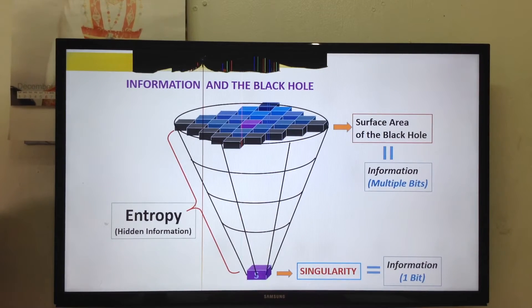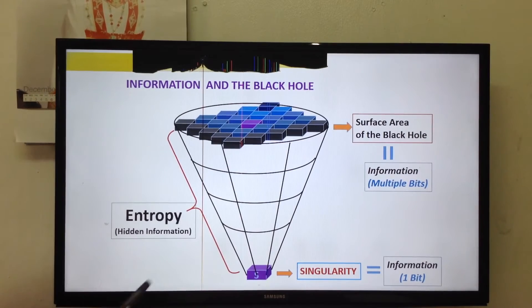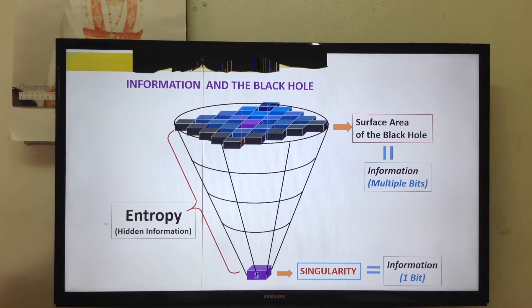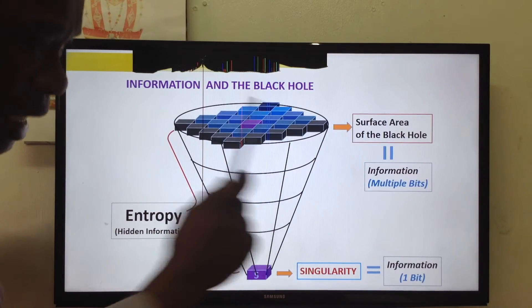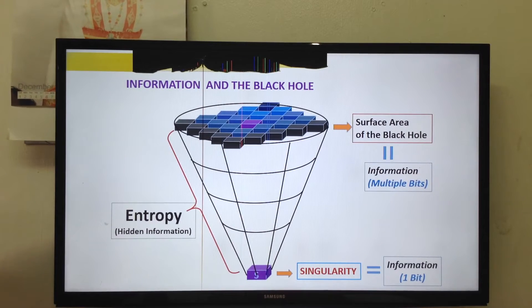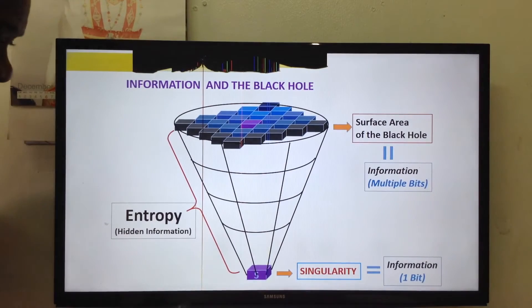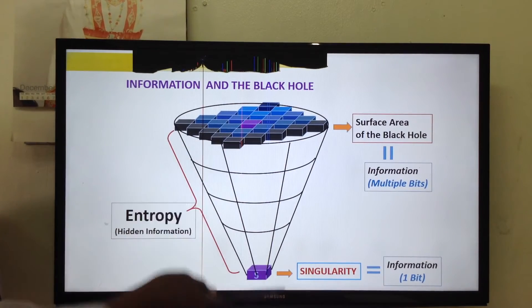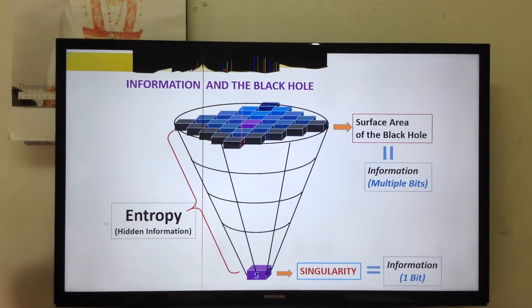So now, we know that the singularity represents information. And we have information on the surface of the black hole predicted by holographic principles. So, the problem is how to link these two areas of information inside the black hole.